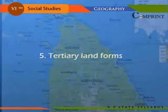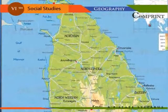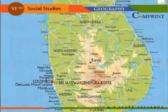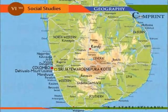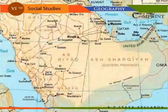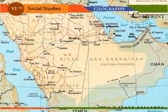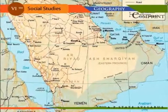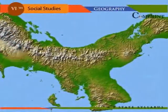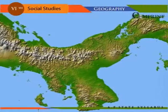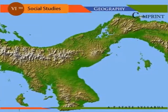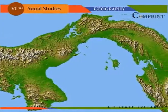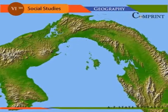Territory Landforms. A piece of land surrounded by water on all sides is known as an island — for example, Sri Lanka, Greenland, Great Britain, etc. A piece of land surrounded by water on three sides only is called a peninsula — for example, India and Saudi Arabia. A narrow stretch of land linking two land masses and separating two water bodies is known as an isthmus — for example, the Isthmus of Panama and the Isthmus of Suez.